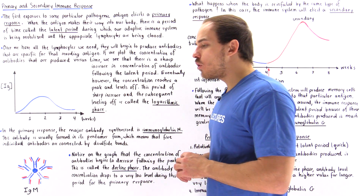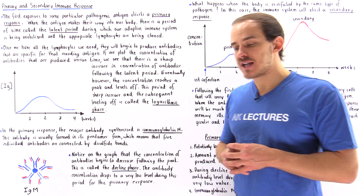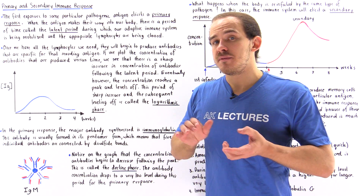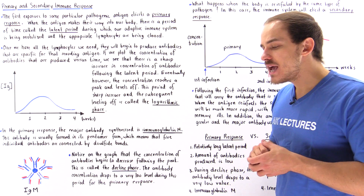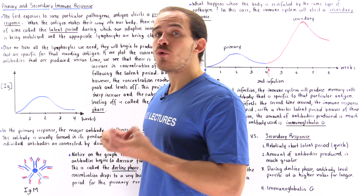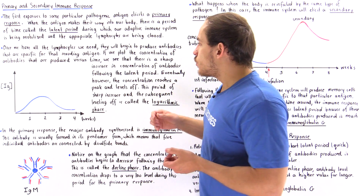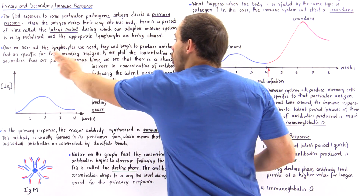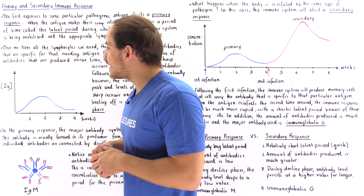Our adaptive immune system will need to create the appropriate plasma cells that can produce the antibodies specific to that infecting antigen. Once we have all those plasma cells and active lymphocytes, the antibodies will begin to be produced and released into our blood, and the concentration of antibodies in our blood will begin to increase sharply. If we plot the concentration of antibodies versus time, we get the following diagram.